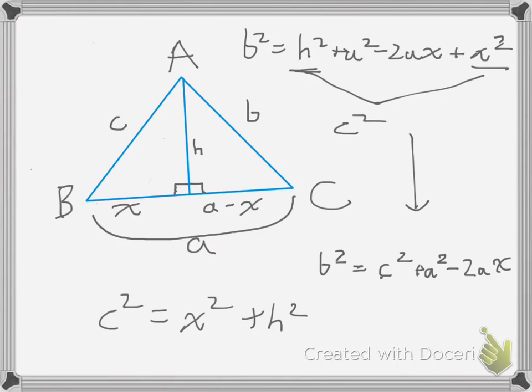Then, we want to solve for x, so we know that the cosine of b is equal to x over c.